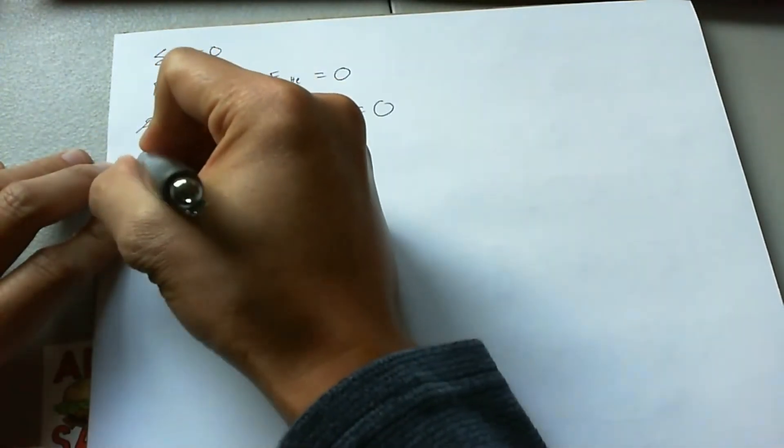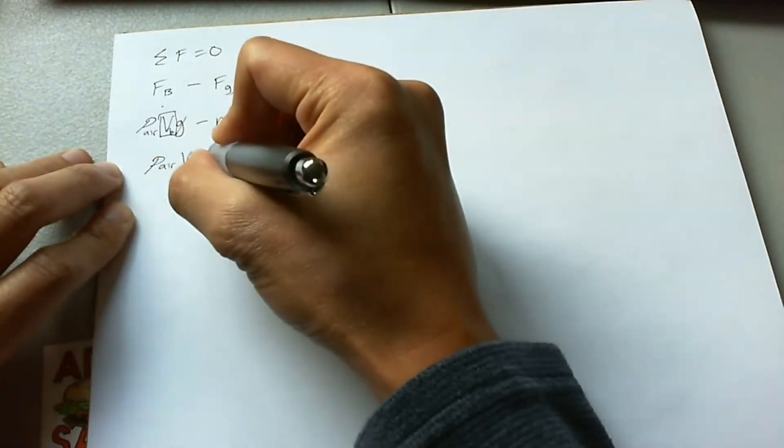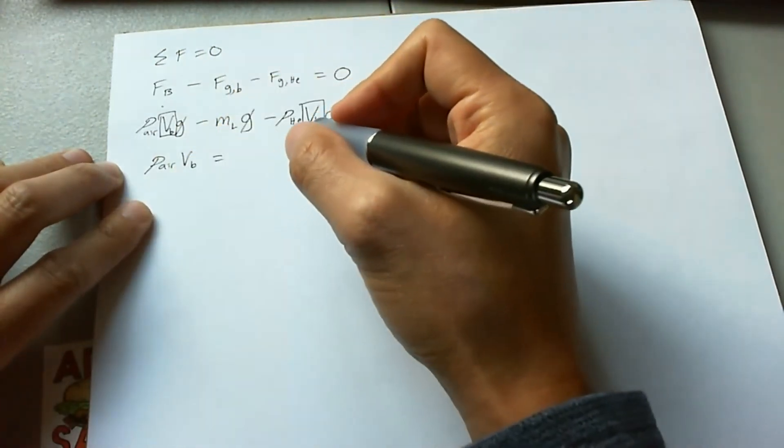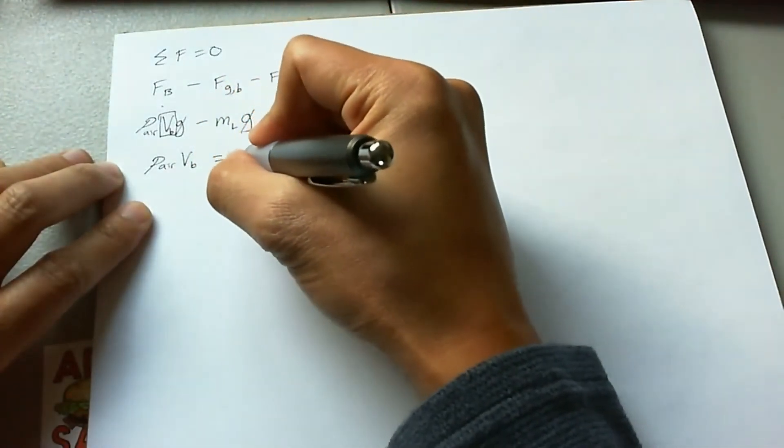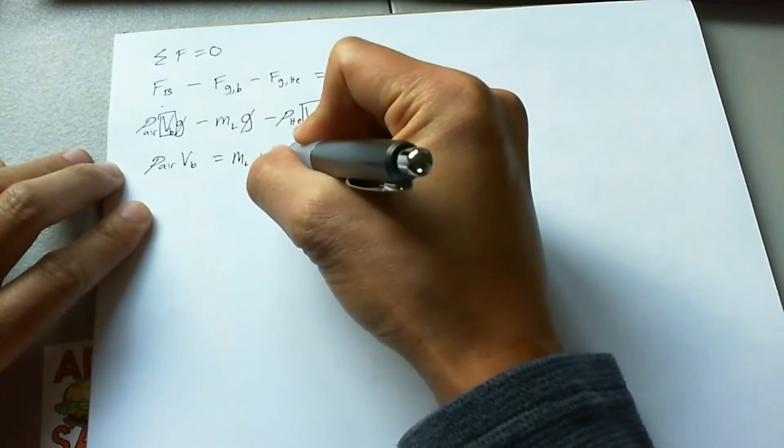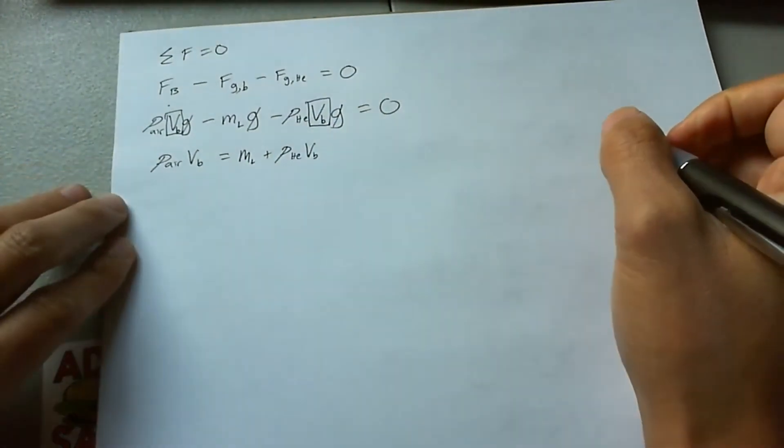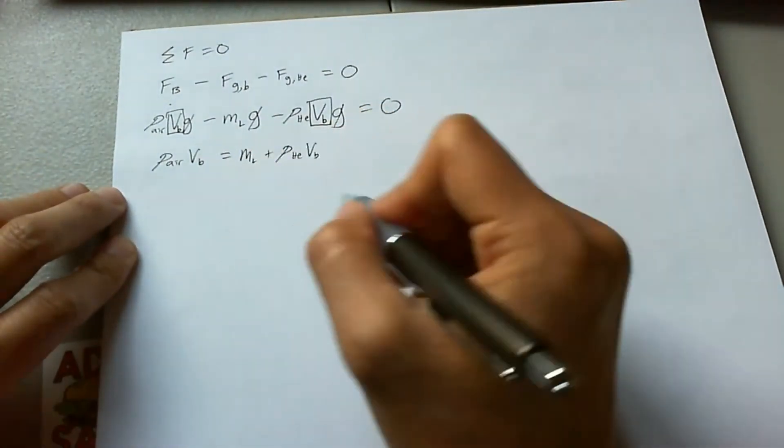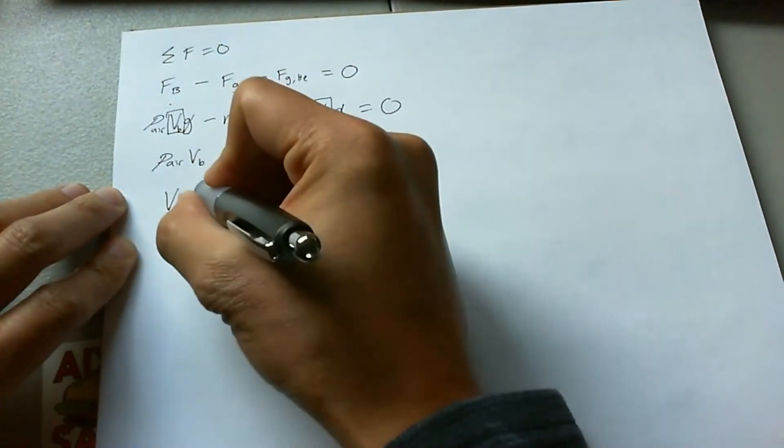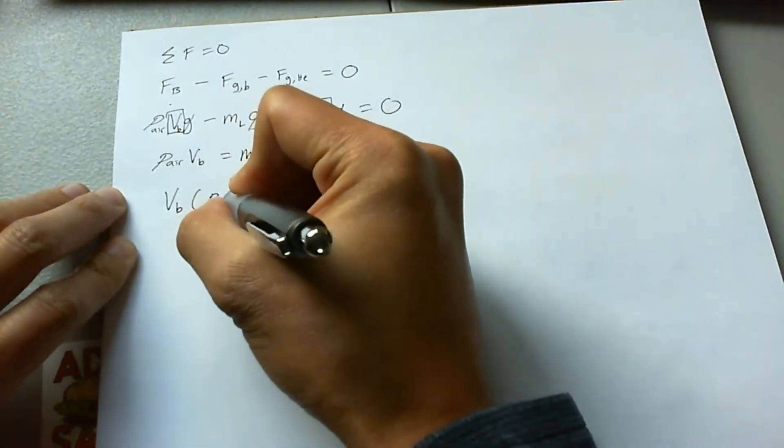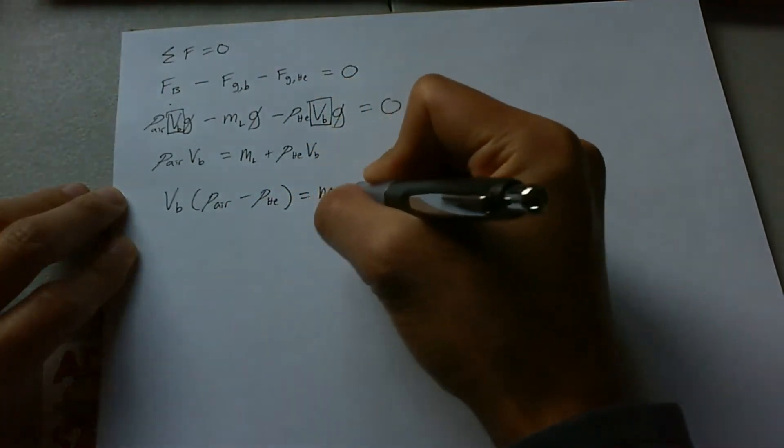This is going to then become rho air V balloon, and that's going to equal to, let's just get this on the other side, mass of the load plus density of helium V balloon. Obviously, I should probably just get balloon on the left-hand side. Let's go ahead and do that. V balloon is equal to rho air minus rho helium, and that's going to equal to the mass of the load.